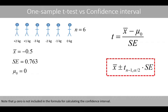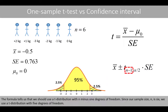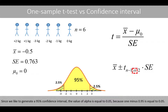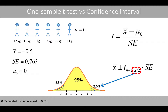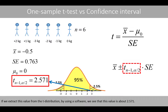Note that mu-zero is not included in the formula for calculating the confidence interval. Instead, the formula requires that we extract the t-score from the t-distribution. We use a t-distribution with n minus 1 degrees of freedom. Since our sample size n is 6, we use the t-distribution with 5 degrees of freedom. Since we want a 95% confidence interval, alpha is equal to 0.05, and 0.05 divided by 2 is 0.025. We extract the t-score that defines the edge of the upper tail covering 2.5%, which is approximately 2.571.